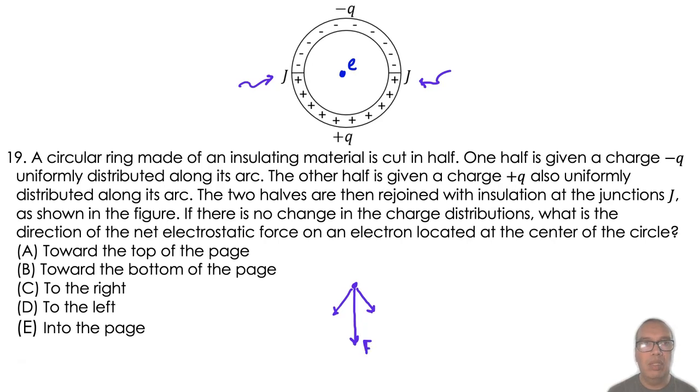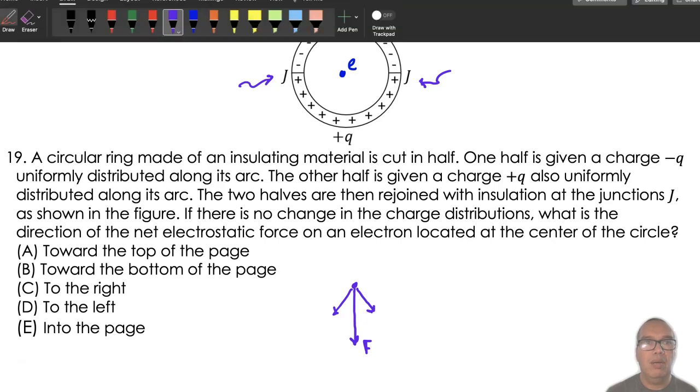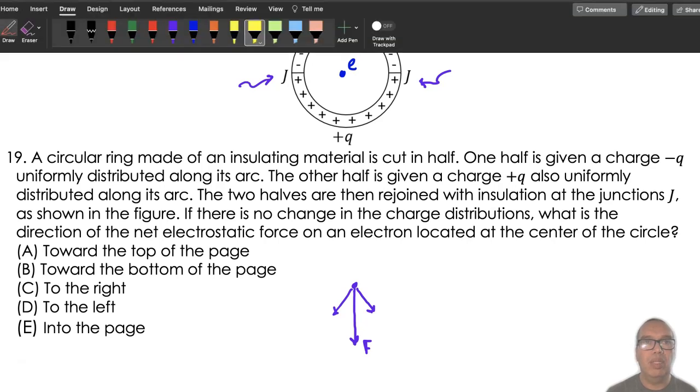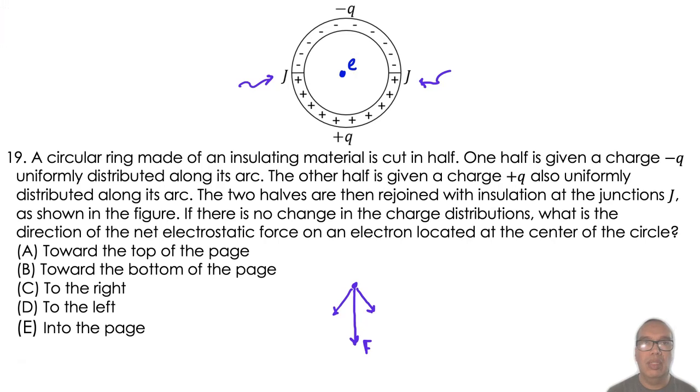Therefore, all remaining force components are vertical. Negative charges on the top have downward force components and positive charges on the bottom have downward force components. So, the net force on the electron is toward the bottom of the page. Option B.